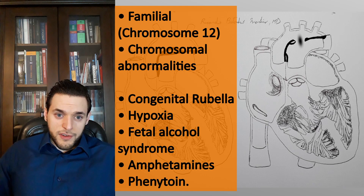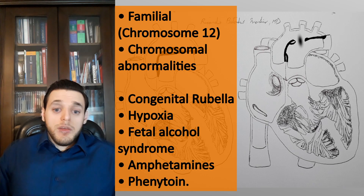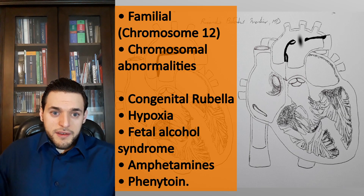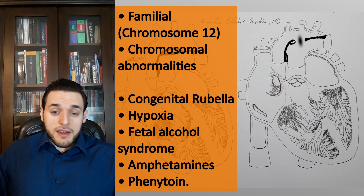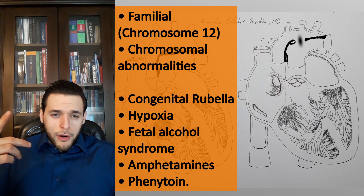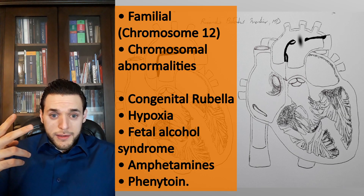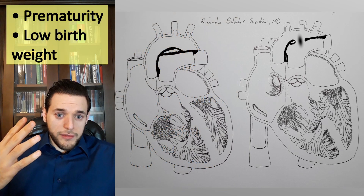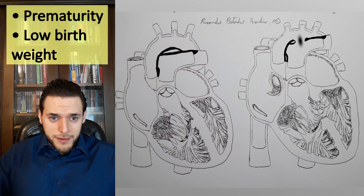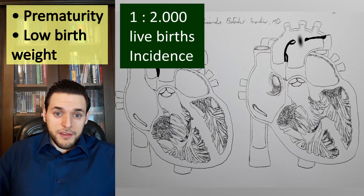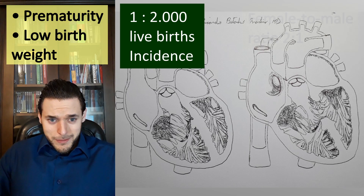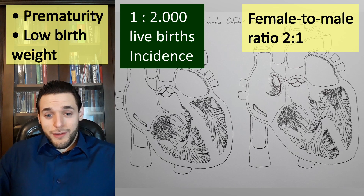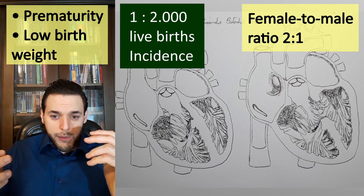Patent ductus arteriosus is a common condition with many different possible origins. It has some familial causes associated with chromosome 12, may be present in many chromosomal abnormalities, and can also result from congenital rubella infection in the first trimester of pregnancy. Hypoxia, fetal alcohol syndrome, and maternal consumption of amphetamines and phenytoin, prematurity, and low birth weight are important risk factors. PDA incidence is approximately 0.5 per thousand live births, though this value is debatable. Like other shunts, it is twice as common in females in the absence of teratogens.